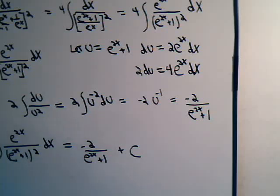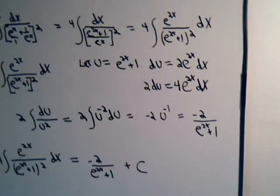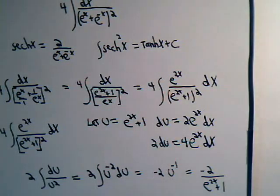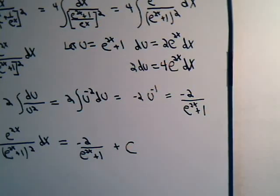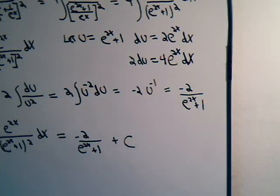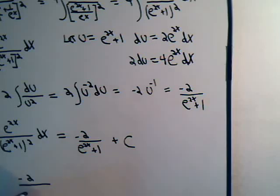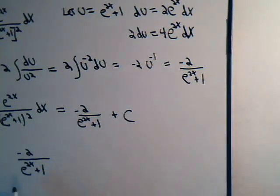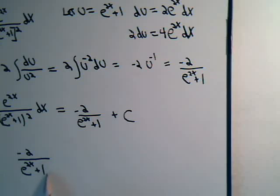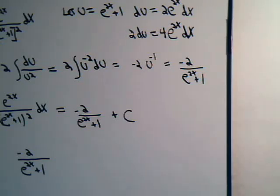So right now we're claiming that the integral of 4 e to the 2x divided by e to the 2x plus 1 squared dx equals minus 2 divided by e to the 2x plus 1, plus an arbitrary constant. That certainly seems valid. But before we claimed it was the hyperbolic tangent of x plus a constant. Are these equivalent? Let's look at this expression. Here's where we have to use our imaginations a little bit.